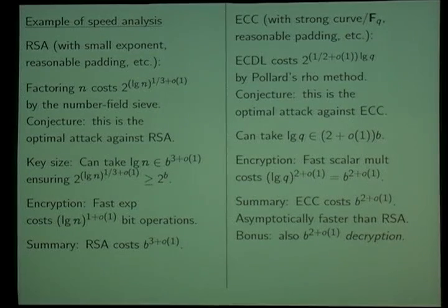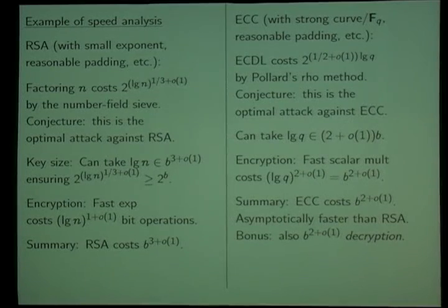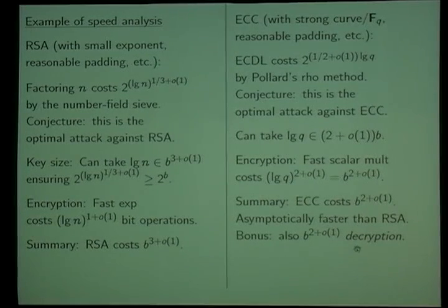This asymptotic analysis tells you that once B is sufficiently large, elliptic curve cryptography is much, much faster than RSA. And actually it's got other advantages — the decryption is also very, very fast. But maybe there's something better.